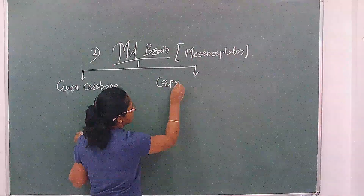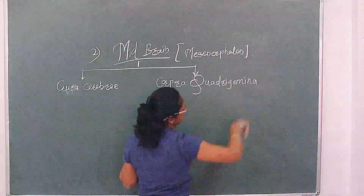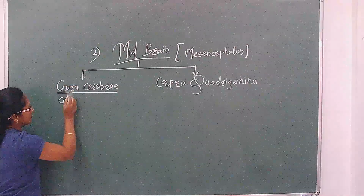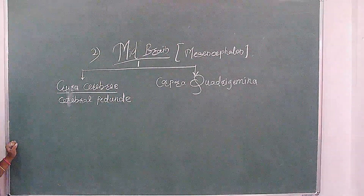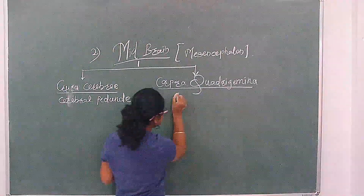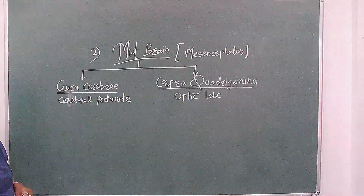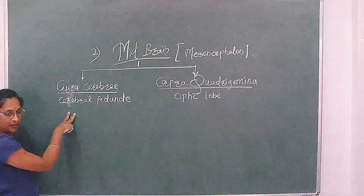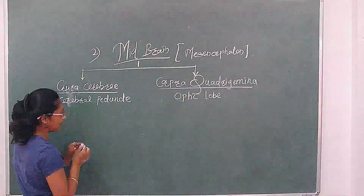The two main parts are corpora quadrigemina and crura cerebri. Crura cerebri is also called as cerebral peduncle. Corpora quadrigemina is also called as optic lobe. These are the two main parts of the midbrain.